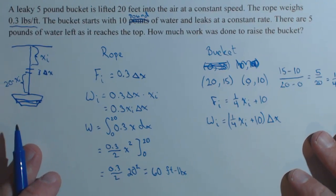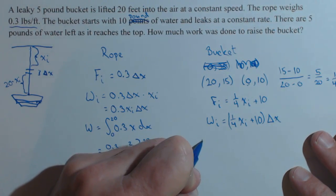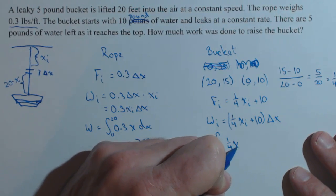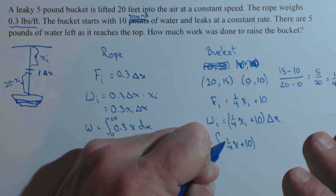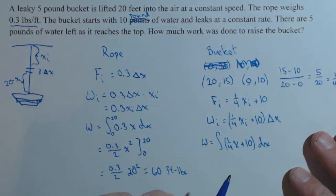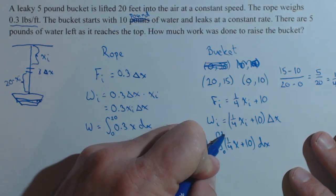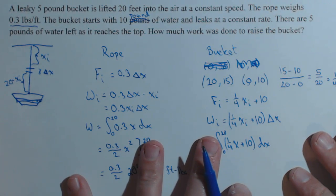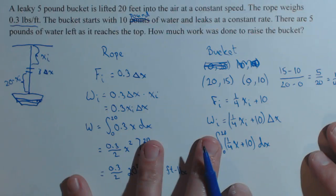Now that we've got our integral set up, because the work is going to be 1 fourth x plus 10 dx. And as we can see, our limits are going to be exactly the same. So we could have done this all in one integral. I just split it up because I wanted to look at each part separately. But this can easily be done all in one integral. You can set up your force for both the rope and the bucket at the same time and set up your work, no problem.